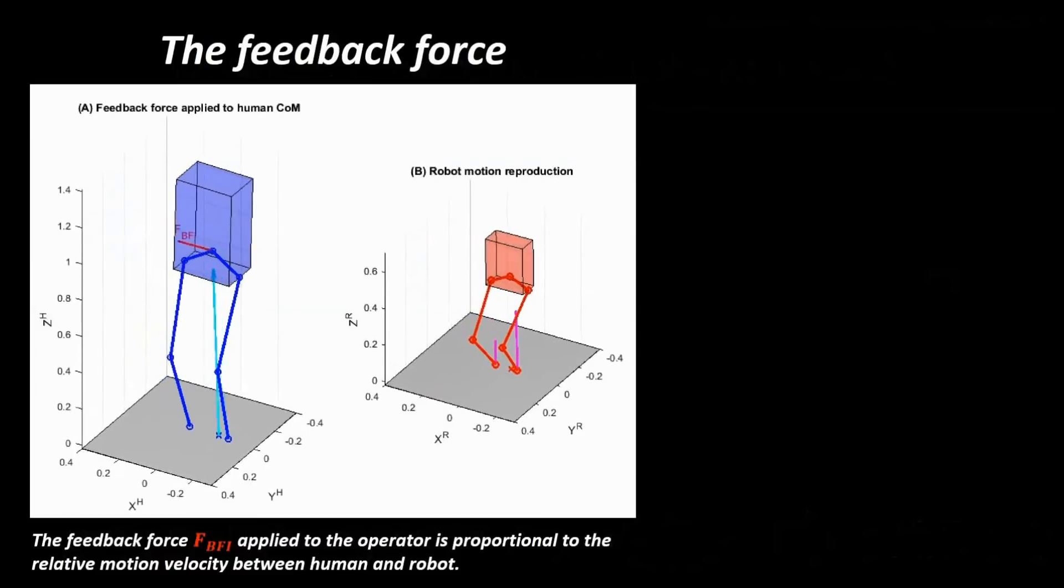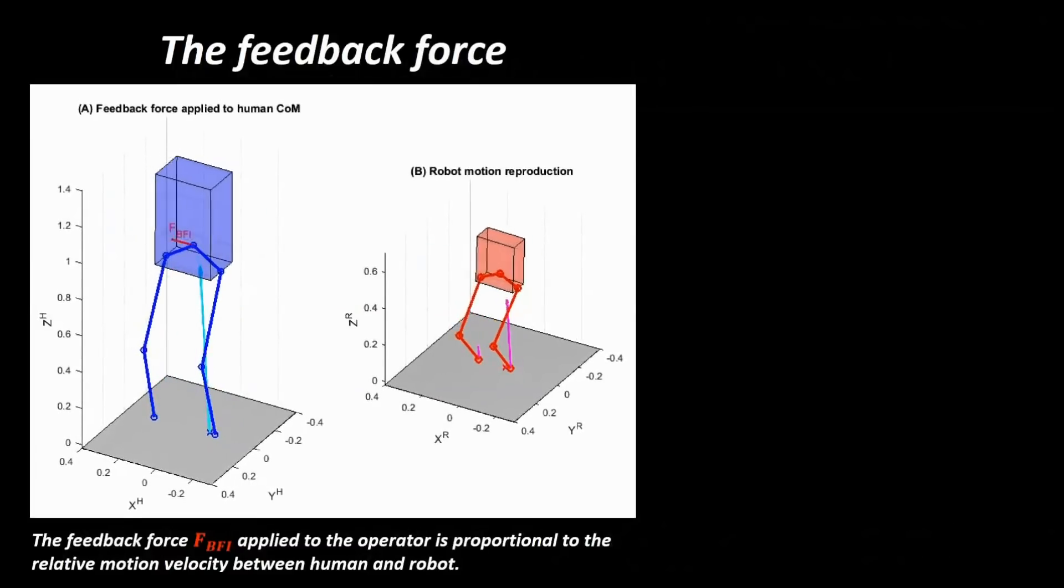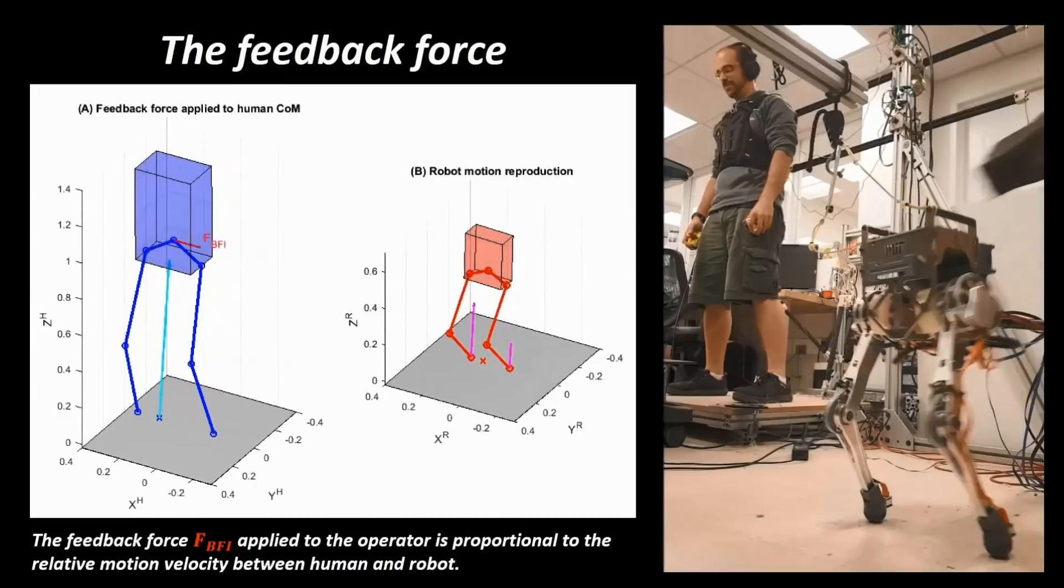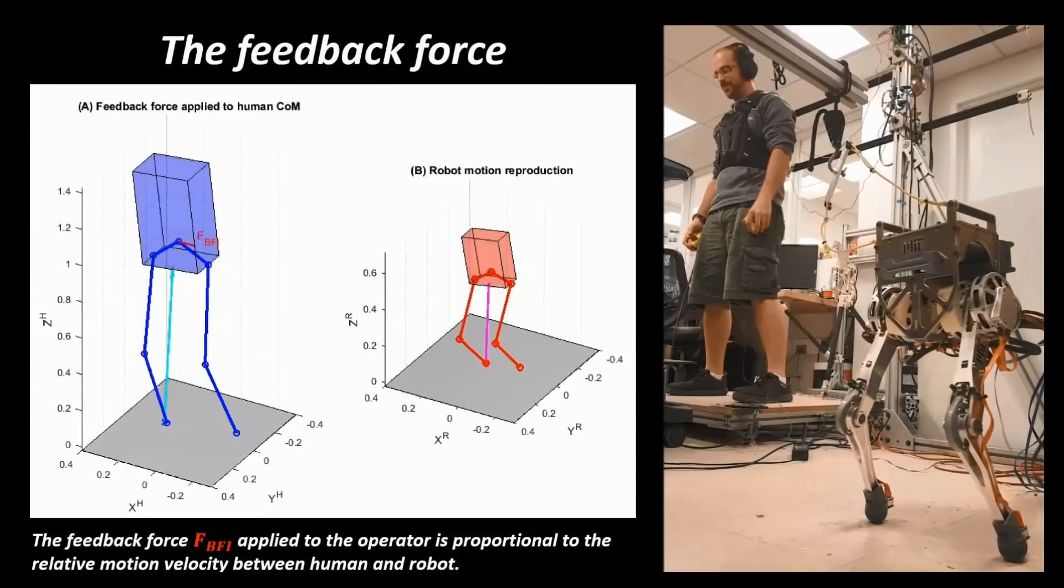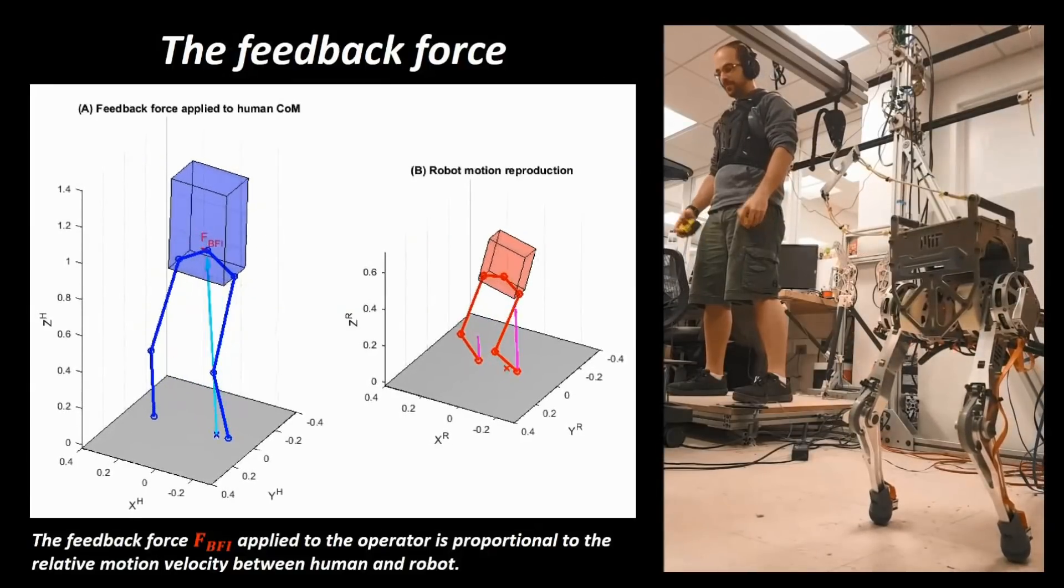Additionally, a feedback force shown in red is applied to the operator to make sure that the human movement is synchronized with the motion of a much smaller and lighter robot. This force is proportional to the relative motion velocity between human and robot.